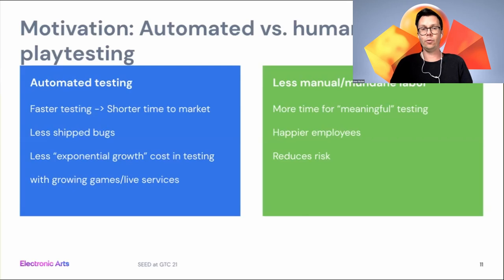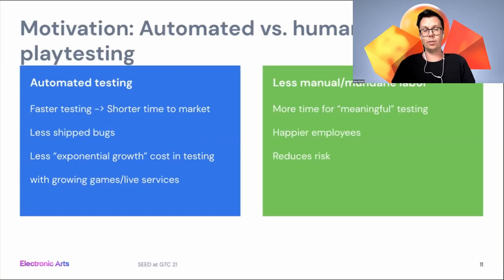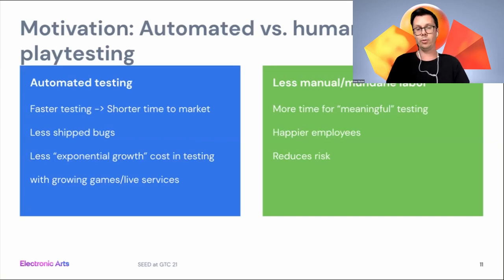To motivate why we look at automated compared to human play testing: one of the main benefits is faster testing, meaning much shorter time to market. We also get fewer bugs if we can test more in breadth. We'll also have less exponential growth in the cost of testing as the environment grows — nowadays with open world games there are more and more assets to test, and that grows exponentially. It also leads to much less manual and mundane labor, leaving more time for meaningful testing, happier employees, and reduced risk since mundane tasks are prone to errors.